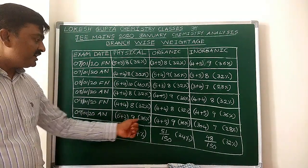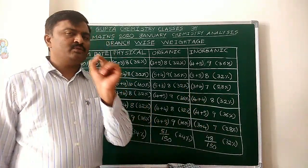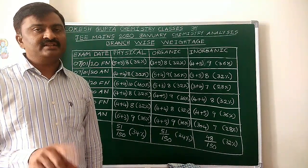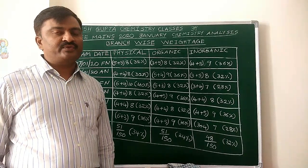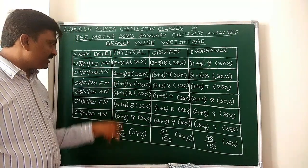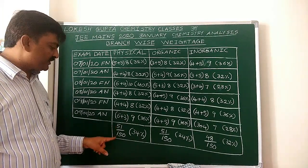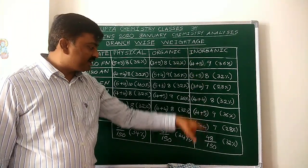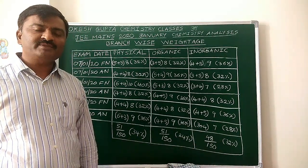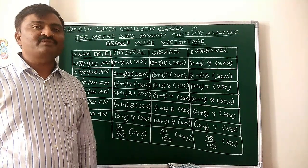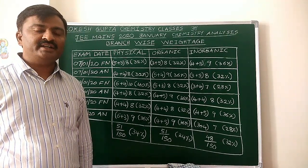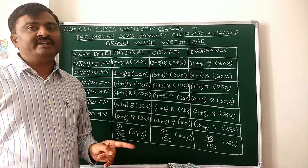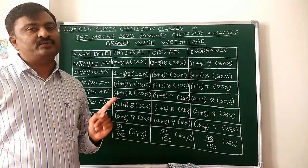9th afternoon: 9, 9, 7 — 1 question less in Inorganic, but that is negligible. Totally, 6 papers, 6 into 25 equals 150 questions: Physical Chemistry 51, Organic Chemistry 51, Inorganic 48 out of 150. Conclusion: they are giving equal weightage for Inorganic, Organic, and Physical. So when planning your study plan, give equal weightage for Inorganic, Organic, and Physical.